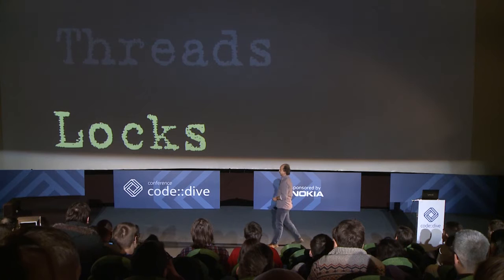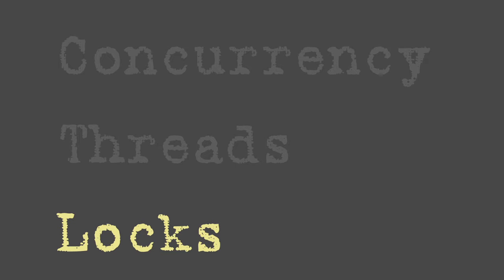But when you ask a lot of people why they're threading, they say 'we want to go faster.' Locks are the anti-thread. The whole purpose of locks is to eliminate concurrency — that is their point. But people don't think of it like that; they think of it in terms of 'we now need to synchronize because we need to be safe.'